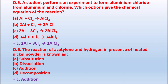Question 6: The reaction of acetylene and hydrogen in the presence of heated nickel powder is known as — Option A: Substitution. Option B: Dissociation. Option C: Addition. Option D: Decomposition. The correct answer is the addition reaction — the reaction between acetylene and hydrogen in the presence of heated nickel powder is an addition reaction.